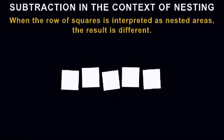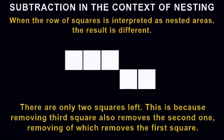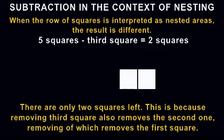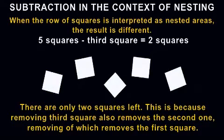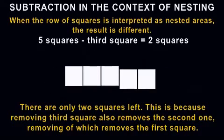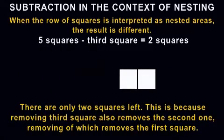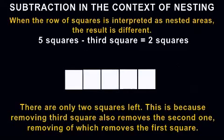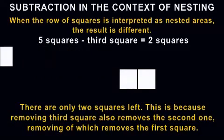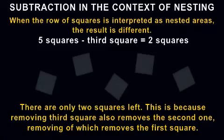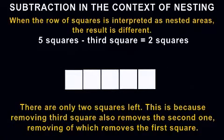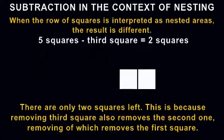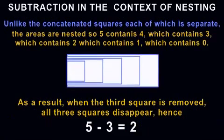Let us consider subtraction in the context of nesting. When the row of squares is interpreted as nested areas, the result is different. Five squares minus the third square equals two squares. There are only two squares left. This is because removing the third square also removes the second one, which removes the first square.